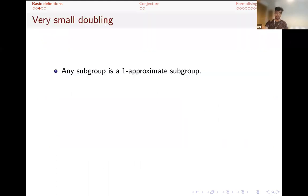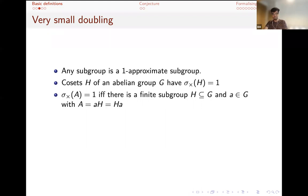Any subgroup is a one-approximate subgroup - it's obviously closed under inverses and the multiplicative doubling can't exceed the size of the original set. Cosets of an abelian group will have multiplicative doubling constant equal to one. If you've got AH and you look at AH times AH, that will just be A squared H, the same size as H. In fact, this is essentially an if-and-only-if characterization: in any multiplicative group, the doubling is exactly one if and only if there's a finite subgroup H and an element A such that A is a translate of that subgroup on both sides.